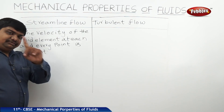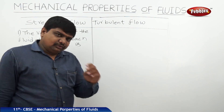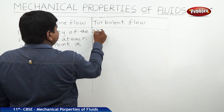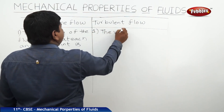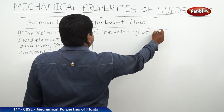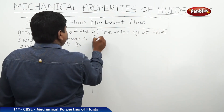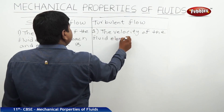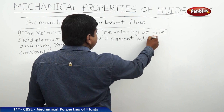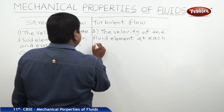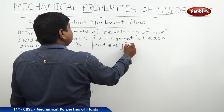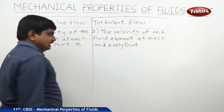But in the case of turbulent flow, the velocity of the fluid elements always varies with time. The velocity of the fluid element at each and every point varies with time.